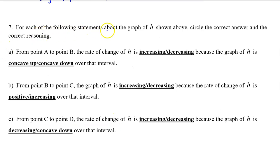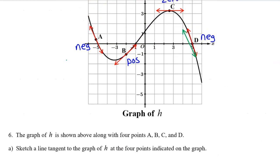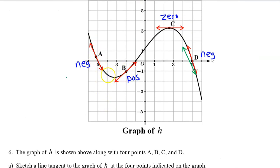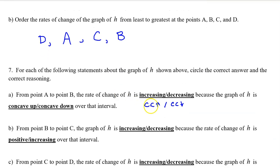Number seven: for each of the following statements about the graph of h, circle the correct answer and the corresponding reasoning. Part a: from point a to point b, the rate of change of h is increasing or decreasing. An increasing rate of change means the function is concave up, and a decreasing rate of change means the function is concave down. From a to b, h is concave up — therefore the rate of change is increasing, because the graph of h is concave up.